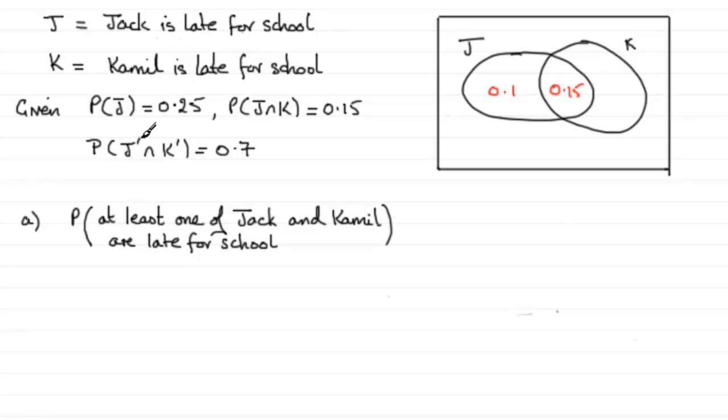Now we've got the probability of not J and not K. So if you're not in J, that's on the outside of J here, and at the same time not in K, you must be just in this surrounding area outside both these regions. So that means that this must be 0.7.